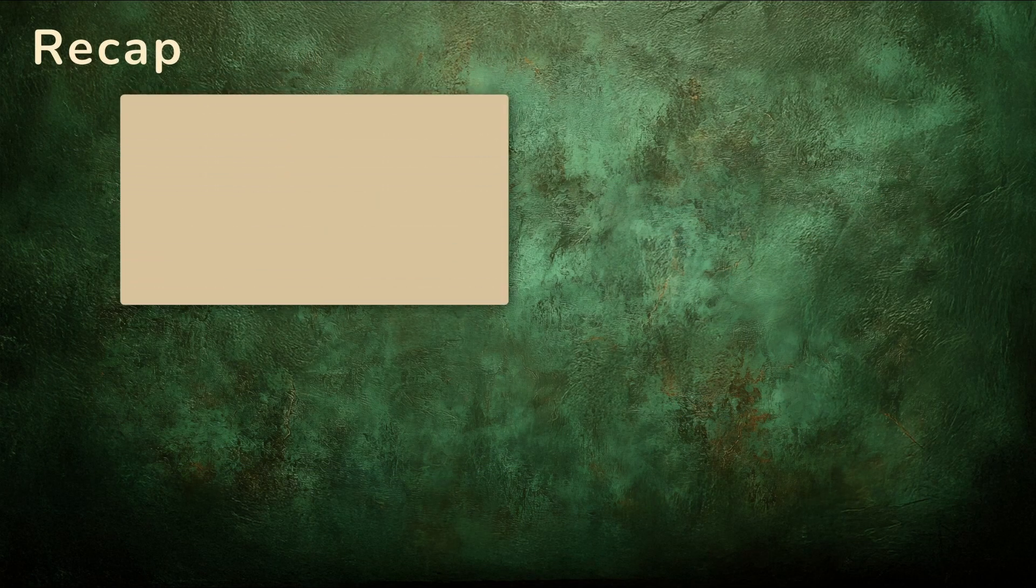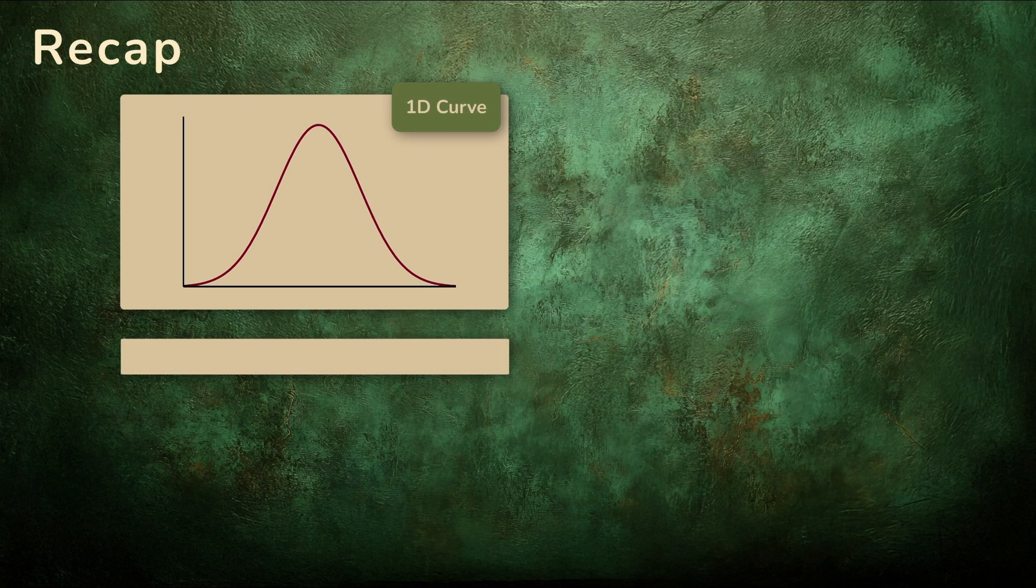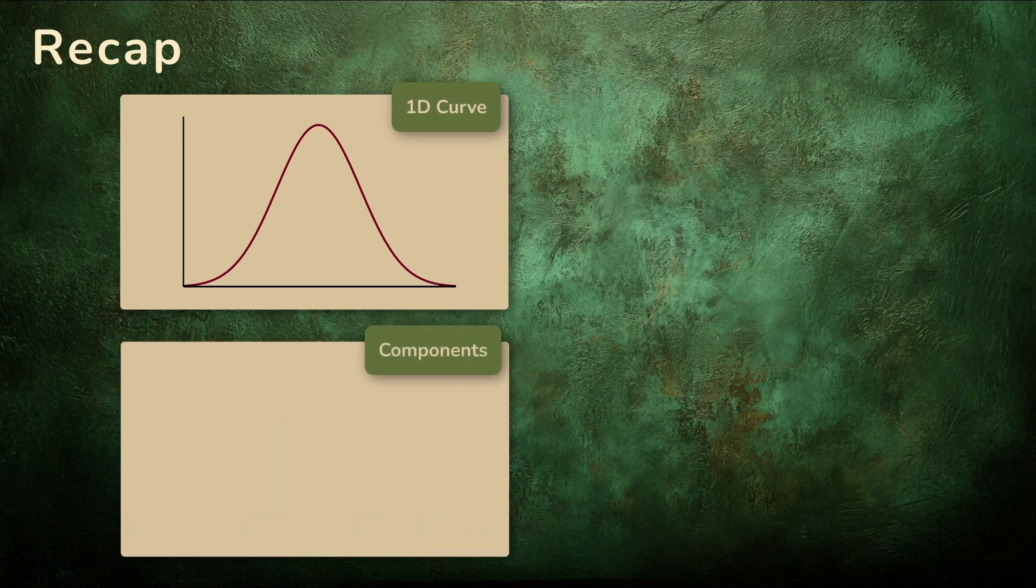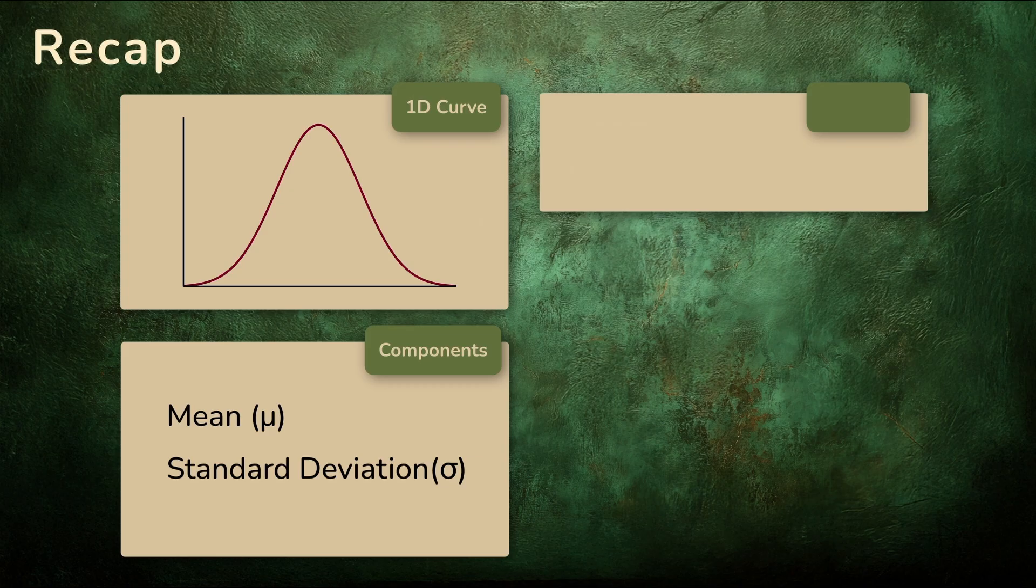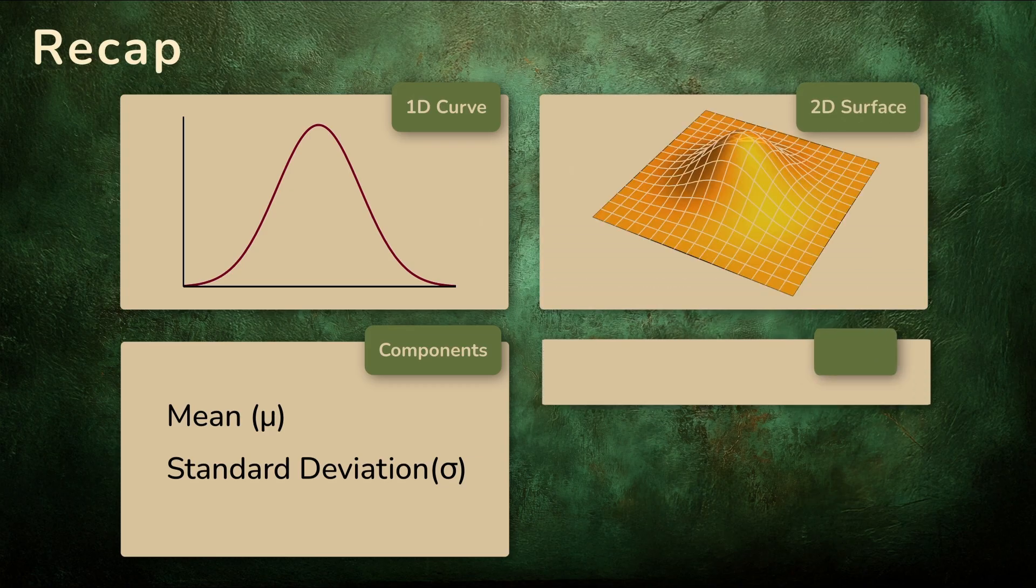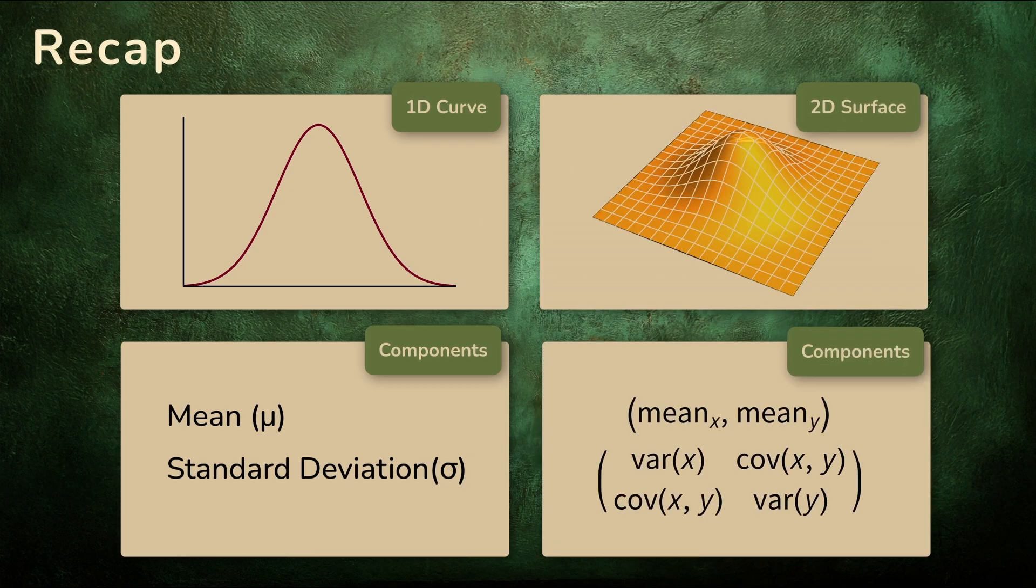We started with the familiar one-dimensional normal distribution. Just two numbers tell the whole story, the mean and the standard deviation. Then we stepped into two dimensions. Suddenly, we needed five numbers, two for the mean vector and three for the covariance matrix.